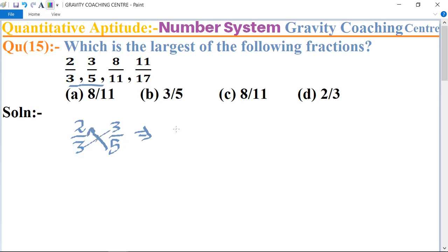5 into 2 and 3 into 3. So 5 times 2 is 10 and 3 times 3 is 9. So 10 is greater than 9, so 2 upon 3 is the larger one.